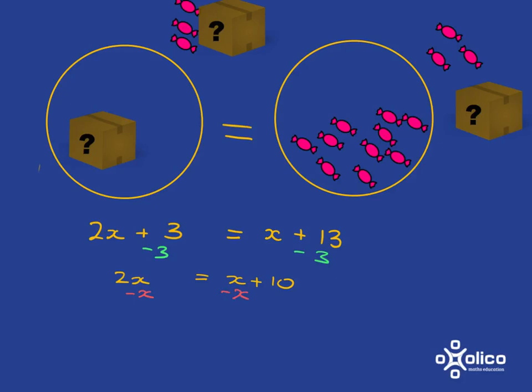I've got 2x minus x, which is just x, and over here I've got 10. Showing me that one box of x sweets is equal to 10 sweets.